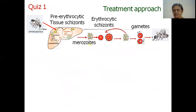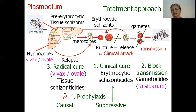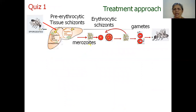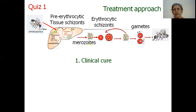To summarize the treatment strategies: erythrocytic schizonticides kill schizonts inside the erythrocytes; gametocidal drugs kill the gametes, though some erythrocytic schizonticides also kill gametes of vivax and ovale; and tissue schizonticides kill the tissue schizonts. A quiz follows to help recapitulate Part 1. Key questions to consider: What is the phase of the malarial parasite that corresponds with the clinical attack of rigors and fever? Which class of drugs is required to control this clinical attack?